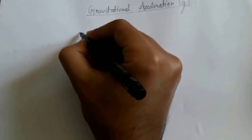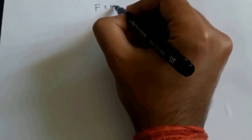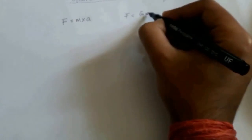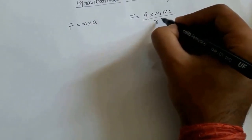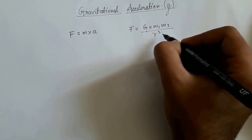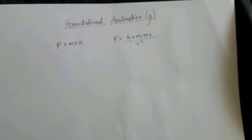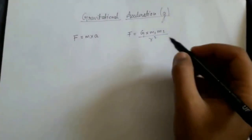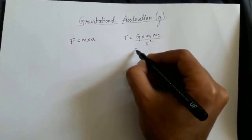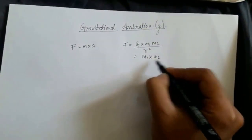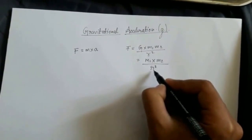There are two equations we are all familiar with. One is F = M × A — this is Newton's second law. The other equation is F = G × M₁ × M₂ / R². What this states is that the force between two bodies is directly proportional to the product of their masses and inversely proportional to the square of the distance between them.